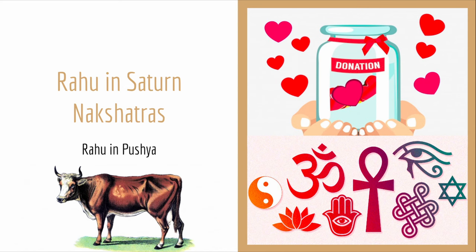Pushya is the first Saturn-ruled asterism, falling in the sign of Cancer. Pushya is all about nourishment — it is represented by a lotus, which is about gaining nourishment and nutrients. Pushya people are very focused on caring for themselves and others around them. They become caretakers, teachers, nurturers, people who are looking to bring welfare to society.